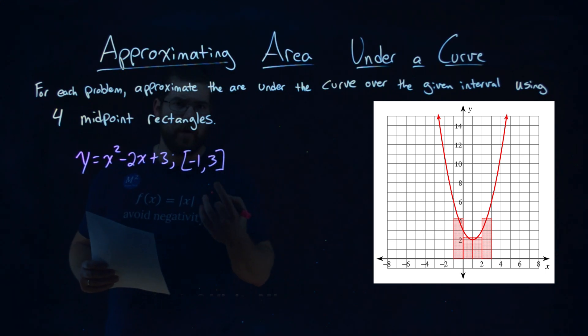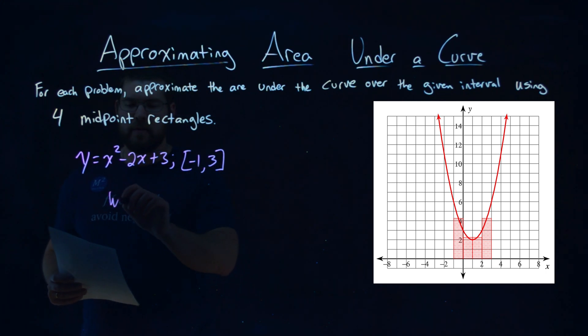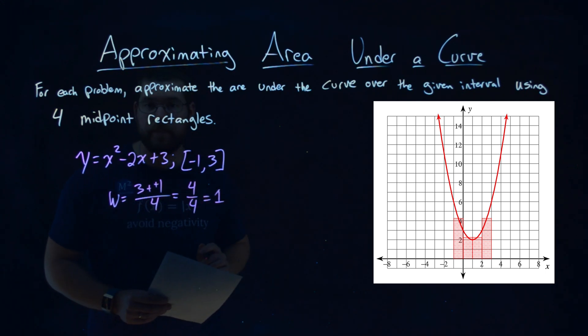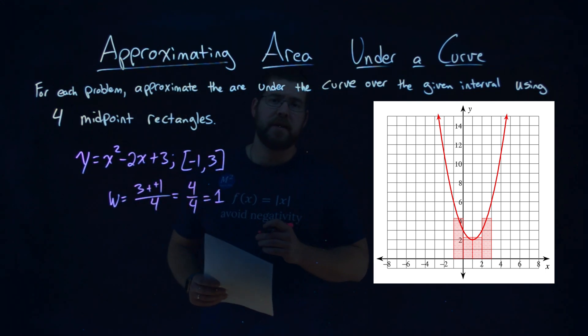Now, I want to find the width of each one of these rectangles. So, I take my upper limit of my interval, 3, and subtract the lower limit of negative 1 to it. Divide that by the number of rectangles, which is 4. 3 minus negative 1 is plus a positive 1, so 3 plus 1 is a 4, and over 4 gives us a 1. So the width of each rectangle now needs to be 1.